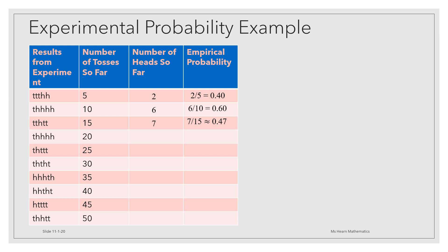In the fourth set of five, we had four heads again, bringing our total number of heads up to 11. So out of the first 20 flips, 11 were heads. 11 twentieths is the empirical probability of getting heads, or 0.55.